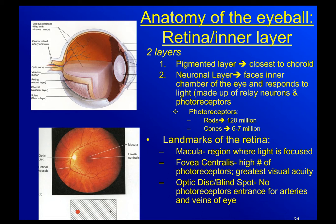The inner layer of the eyeball is called the retina. The retina itself actually has two layers: the pigmented layer and the neuronal layer.